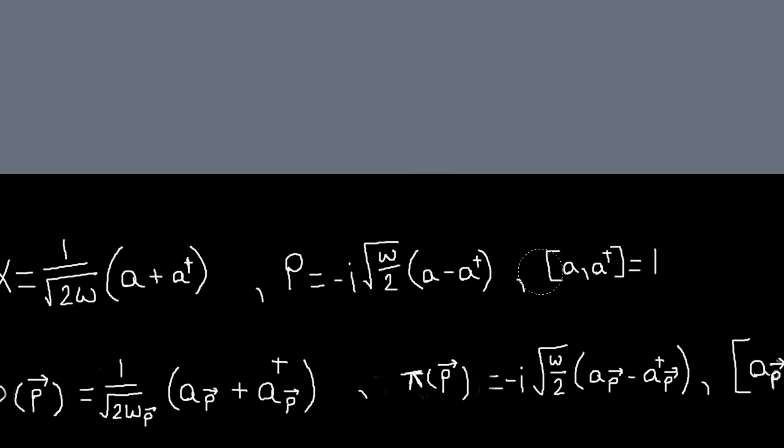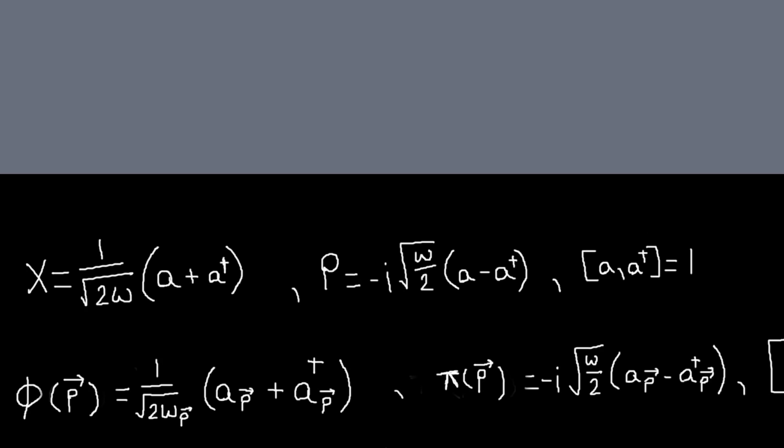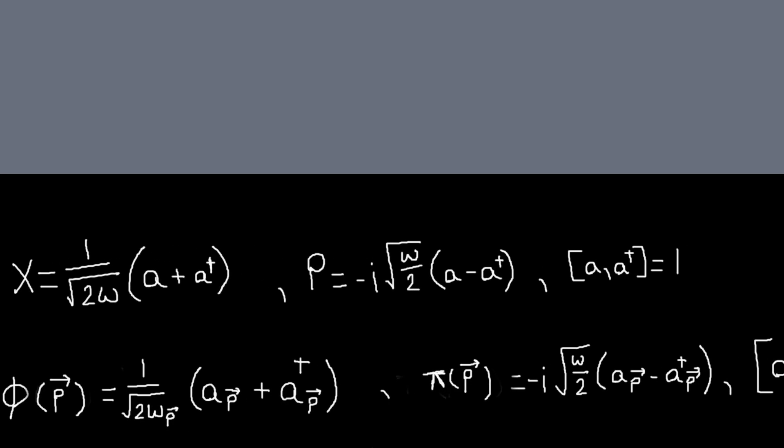We have these expressions from ordinary quantum mechanics. x is 1 over square root of 2 omega times a plus a dagger, p is this. If x satisfies a harmonic oscillator equation, we write it like this. Well, 5p satisfies a harmonic oscillator equation, so we're going to write it like this. The frequency will be omega p. If we had a two-dimensional harmonic oscillator, we would have an ax and an ay. Since we have a harmonic oscillator for each value of p, we're going to label our a's. We'll have an a and an a dagger for each value of p.